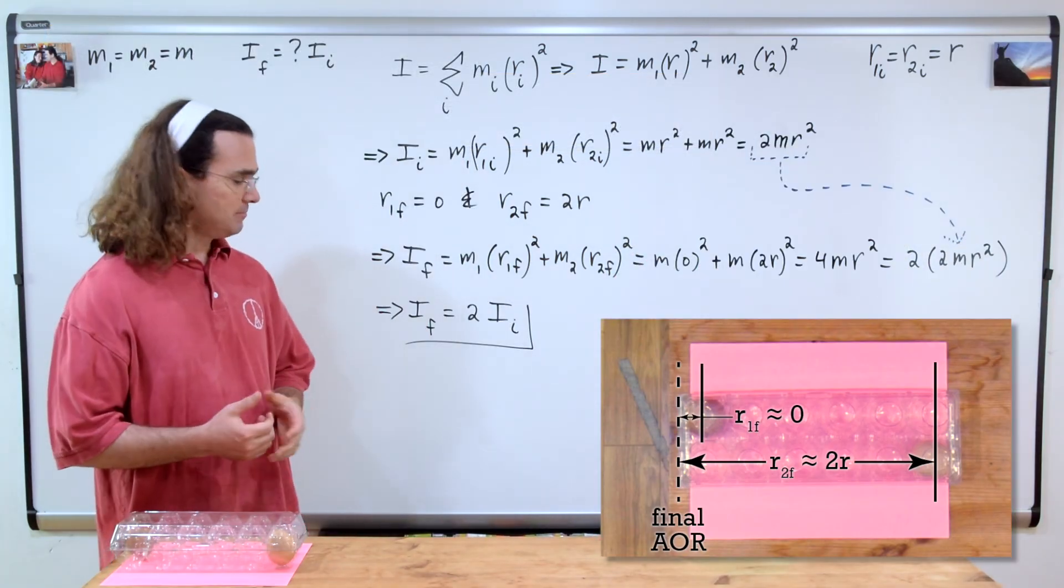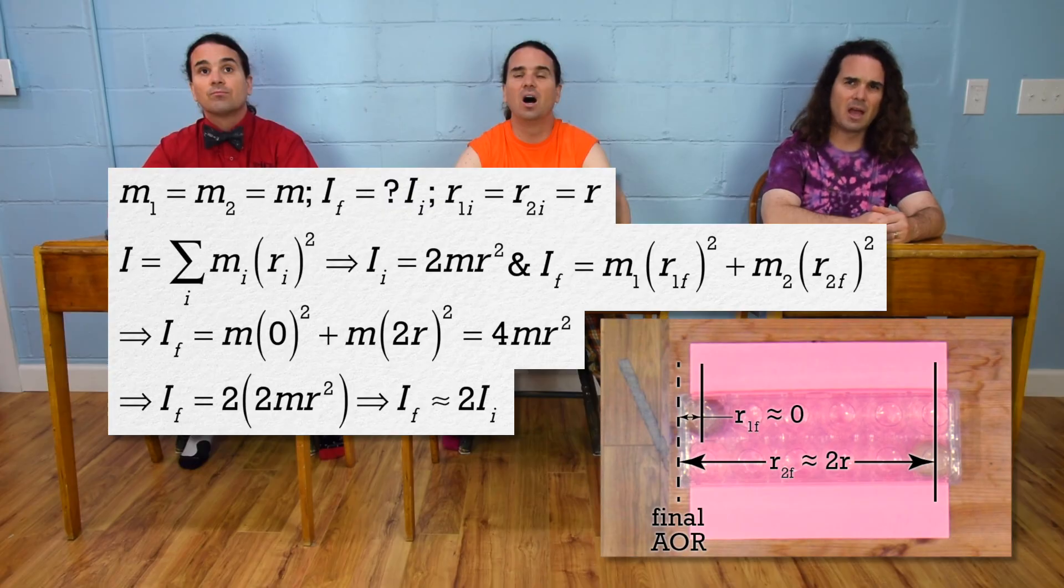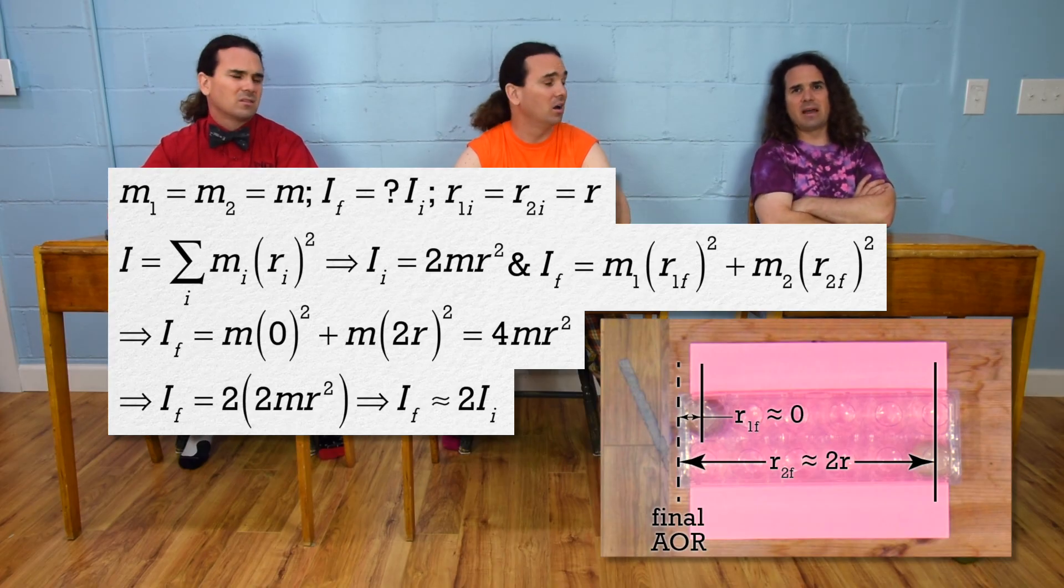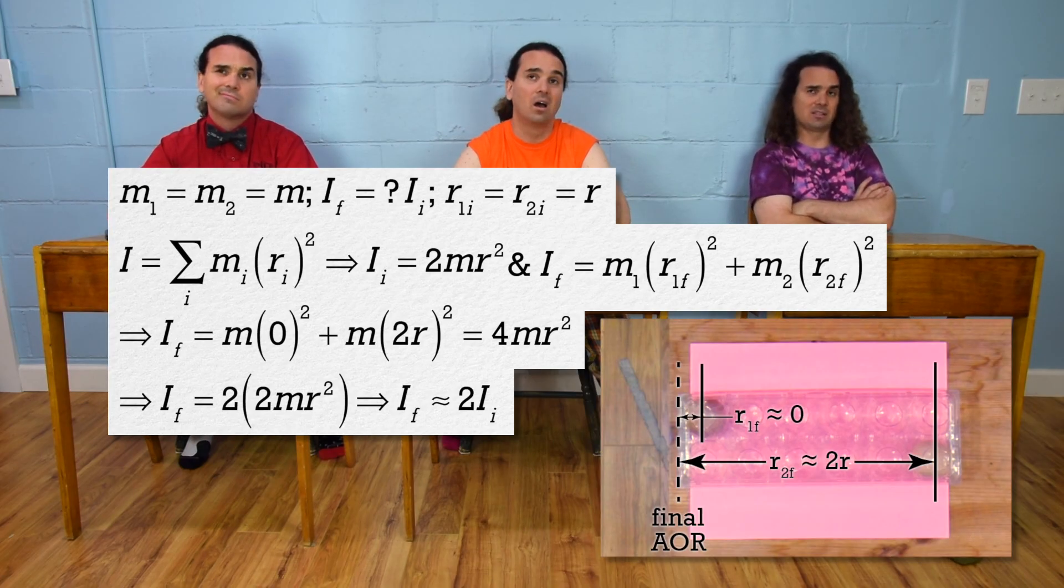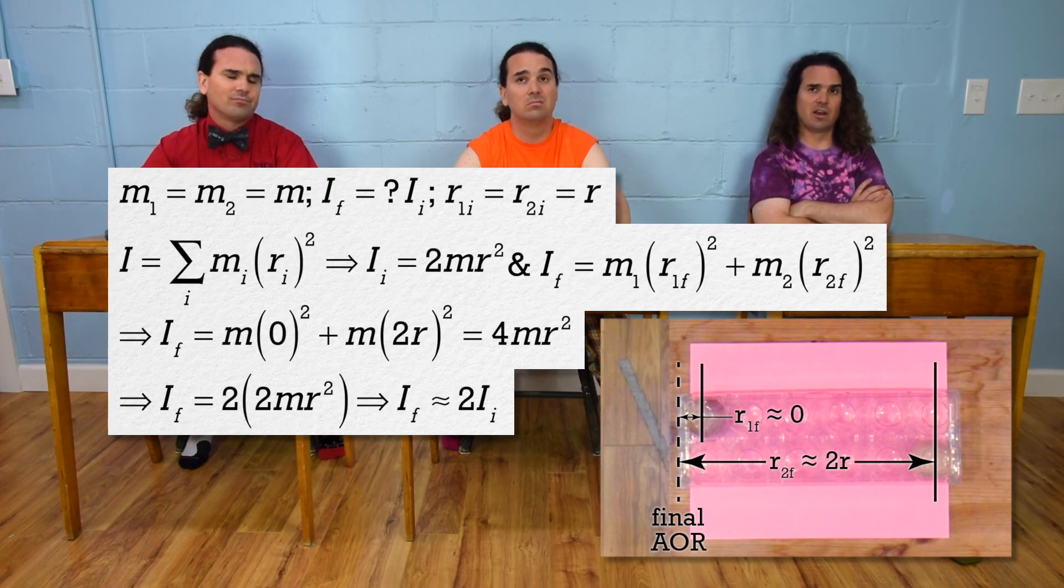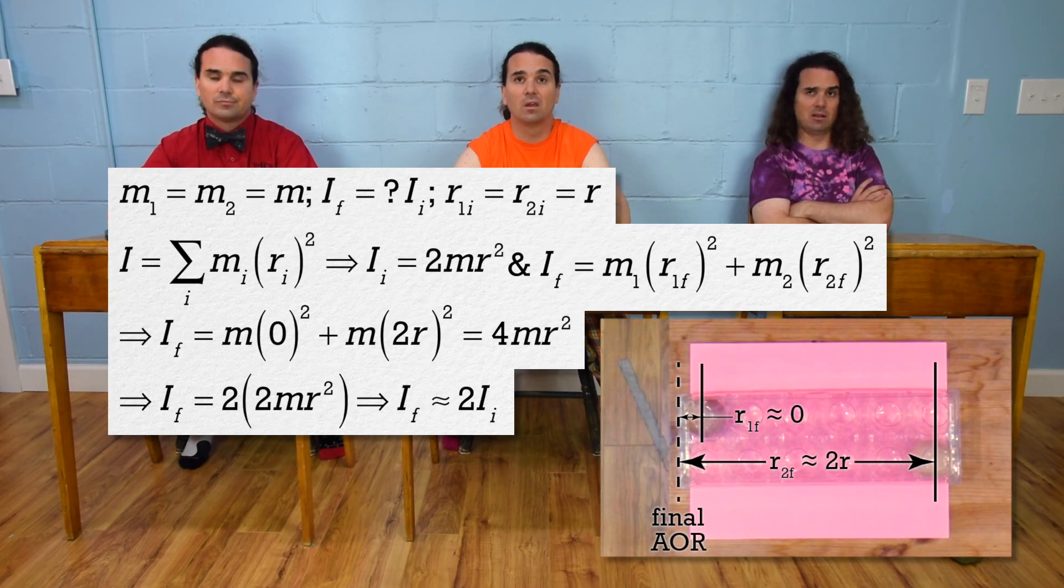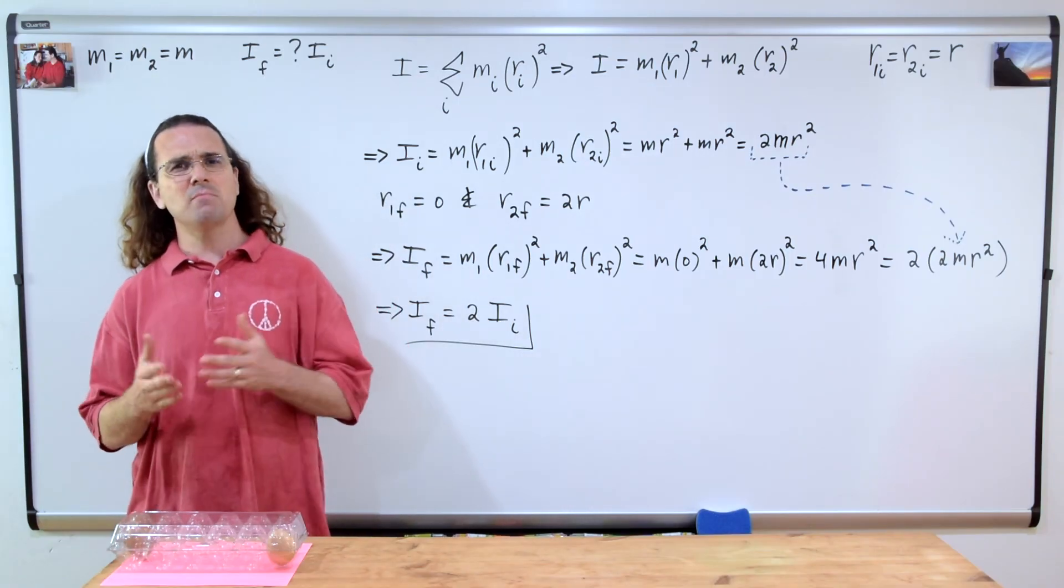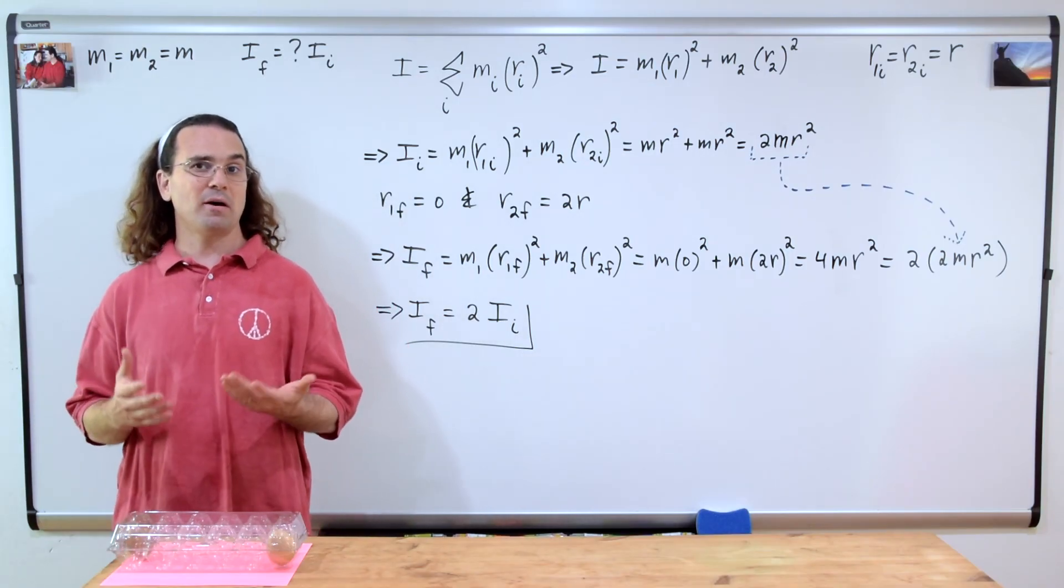That is all correct. But Mr. P? Yes, Bo? If the axis of rotation is at the end of the egg carton, then the center of mass of the first egg is near the axis of rotation, not at it, so r is not actually 0. Sure, Bo. That is a valid point. I meant this problem more as a rough approximation.